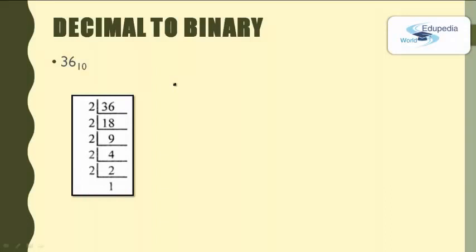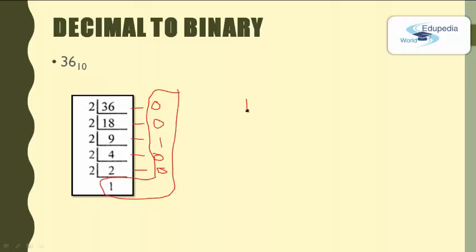Here is another exercise: obtain the binary representation of decimal 36. 36÷2: quotient 18, remainder 0. 18÷2: quotient 9, remainder 0. 9÷2: quotient 4, remainder 1. 4÷2: quotient 2, remainder 0. 2÷2: quotient 1, remainder 0. Writing the remainders in reverse order gives 100100 base 2. This is the binary representation of the decimal number 36.